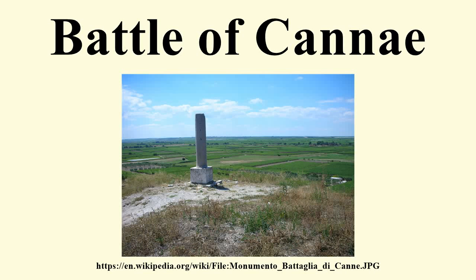The Battle of Cannae is a major battle of the Second Punic War that took place on 2 August 216 BC in Apulia, in southeast Italy. The army of Carthage, under Hannibal, decisively defeated a larger army of the Roman Republic under the consuls Lucius Emilius Paulus and Gaius Terentius Varro.